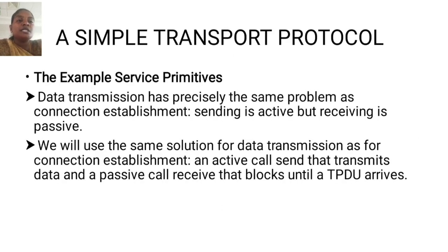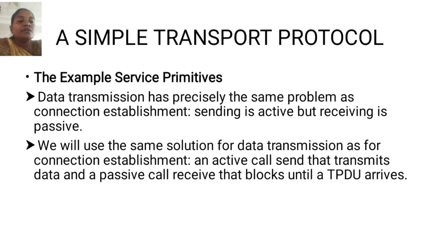The first topic is a simple transport protocol. The example serves as primitives. Data transmission has precisely the same problem as connection establishment. Sending is active but receiving is passive. We will use the same solution for data transmission: an active call send that transmits data on a passive call receive that blocks until a TPDU arrives.